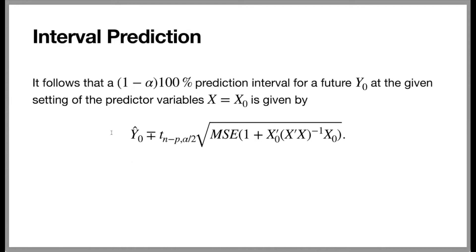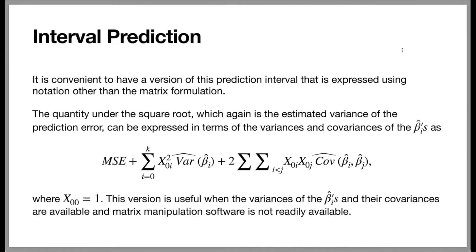We start with the point predictor y hat sub 0, then go a distance to the left and to the right equal to the margin of error. The margin of error is equal to the product of the interval coefficient — which comes from the t distribution with N minus p degrees of freedom — and the estimated standard error of the prediction error. It's convenient to also express this prediction interval using notation other than the matrix formulation. The quantity under the square root sign — the estimated variance of the prediction error — can be expressed in terms of the variances and covariances of the beta hats.